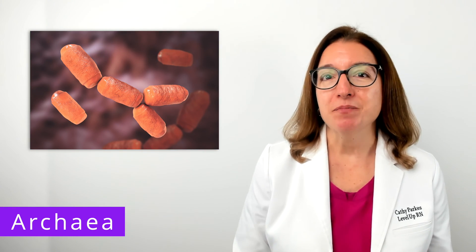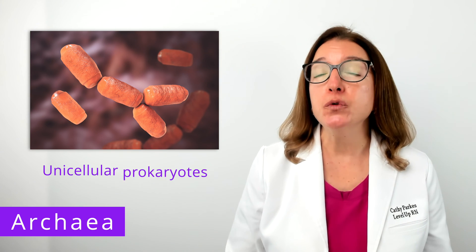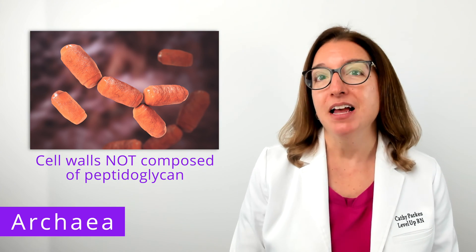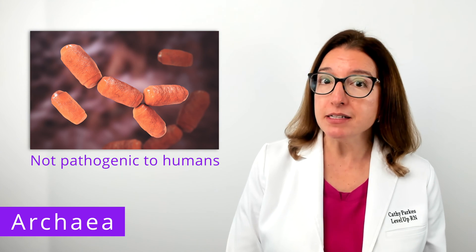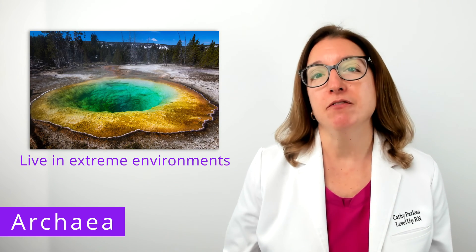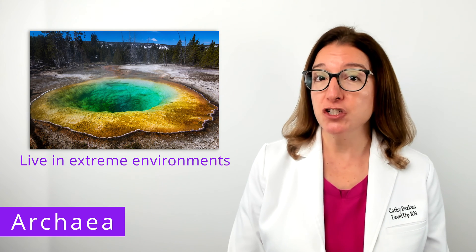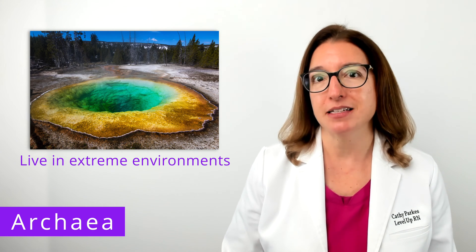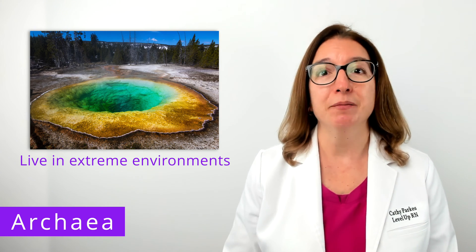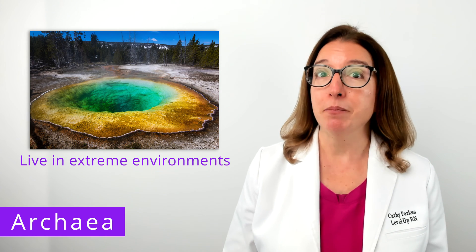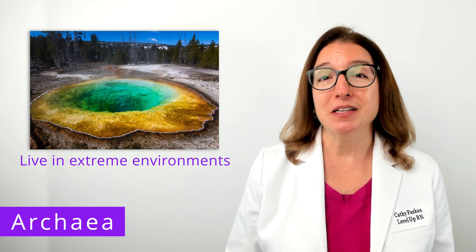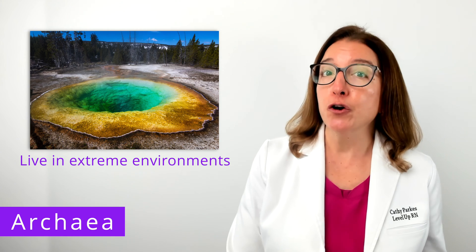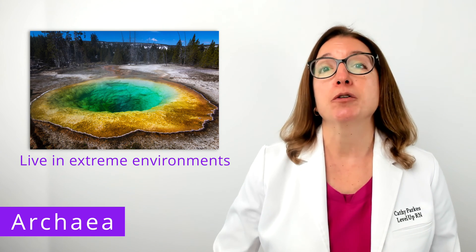Next, let's talk about archaea. Like bacteria, archaea are unicellular prokaryotes, but their cell walls do not contain peptidoglycan. Archaea are not harmful to humans and are able to live in extreme environments. For example, methanogens are a type of archaea that survive in anaerobic environments — environments that lack oxygen — and they produce methane as a byproduct of their metabolism. Other examples include halophiles, which live in extremely salty environments, and thermophiles, which survive in extremely hot environments.